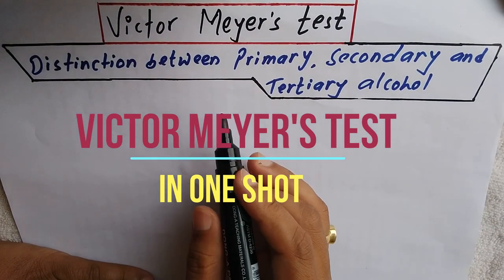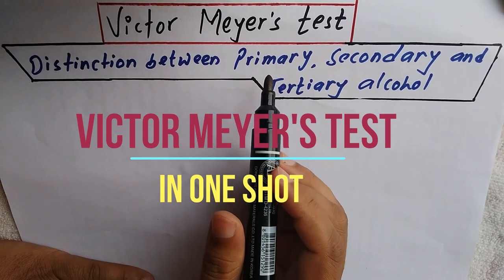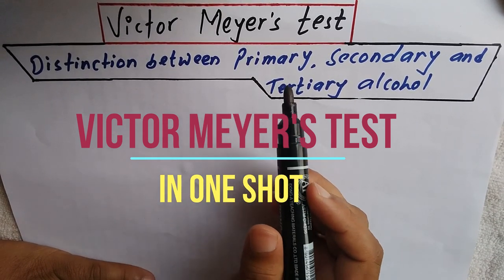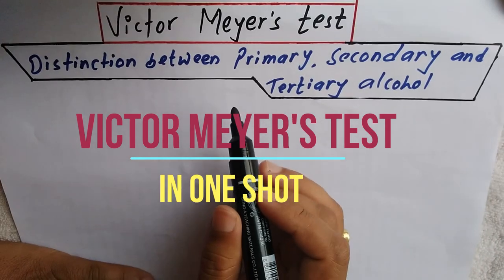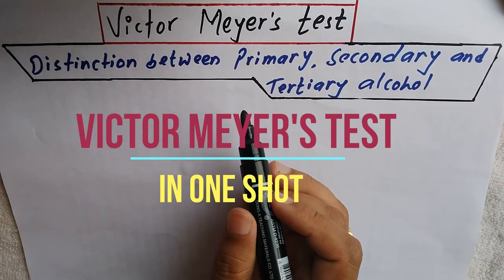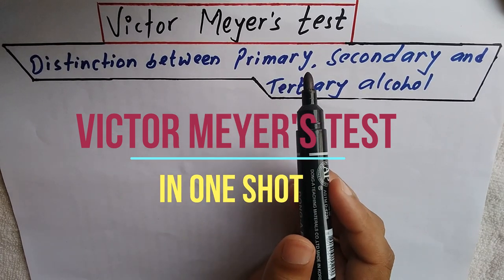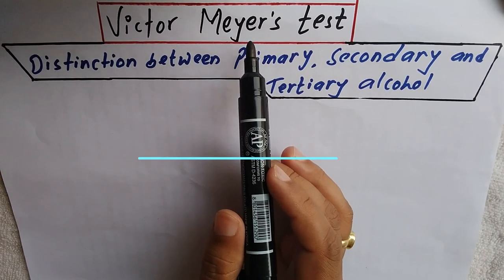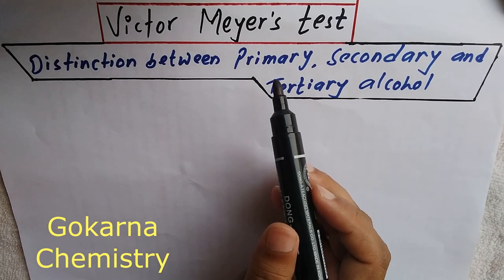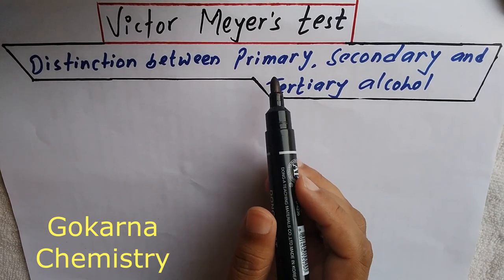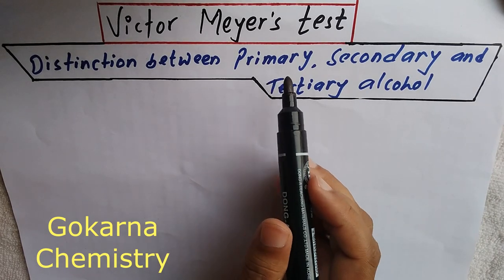Hello students, today we are going to study a concept from alcohols which is very important and frequently asked. After this video you will be able to distinguish primary, secondary, and tertiary alcohol by the Victor Meyer method. It is very important for all types of exams including medical, engineering, and board exams.